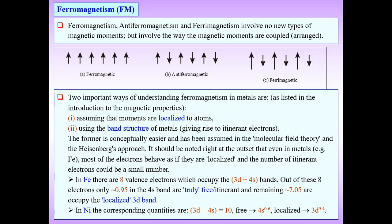Out of these eight valence electrons in Fe, only 0.95 electrons in the 4s band are truly free itinerant electrons, and the remaining 7.05 occupy the localized 3d band. For Ni, the corresponding quantities are: 3d + 4s = 10, with 0.6 free 4s electrons and 9.4 localized 3d electrons.